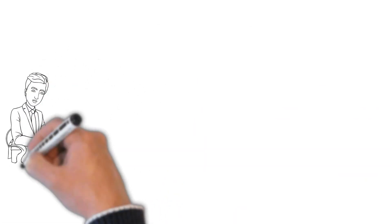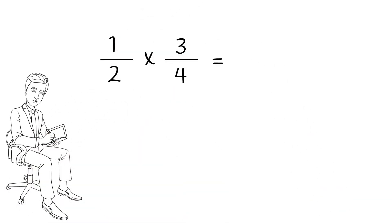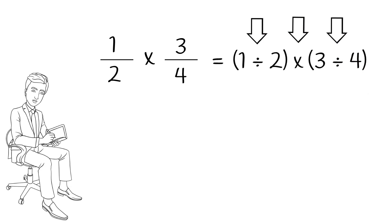Now, since fractions are division, that means if I have a problem 1 half times 3 fourths is the same as a problem 1 divided by 2 times 3 divided by 4. That means I have both multiplication and division in the same problem. And because they get along so well, that means I can just rearrange our problem to look like this.